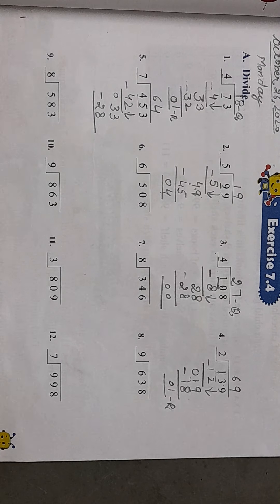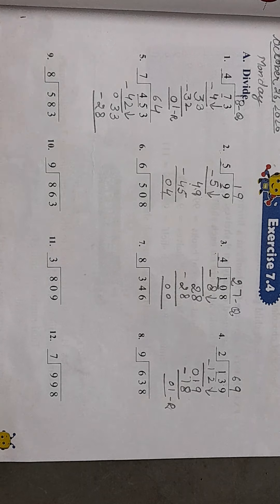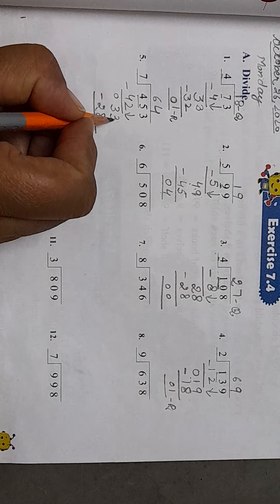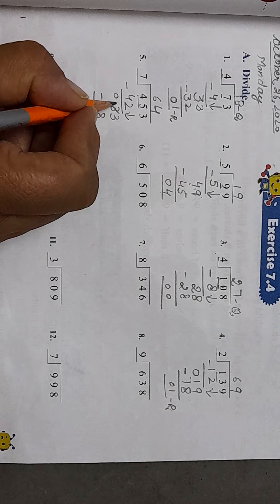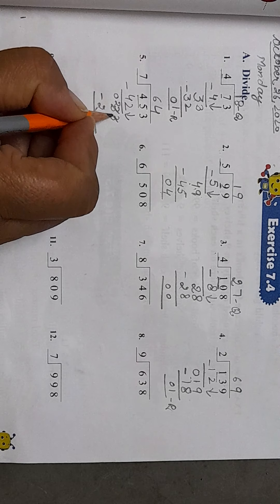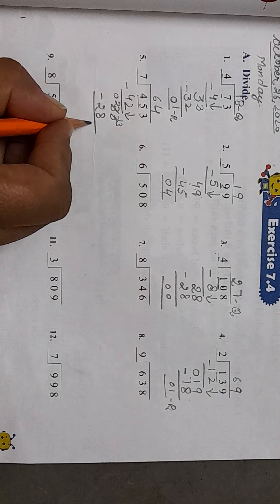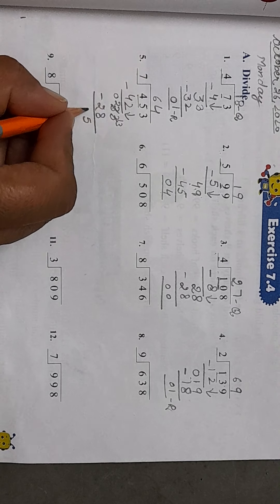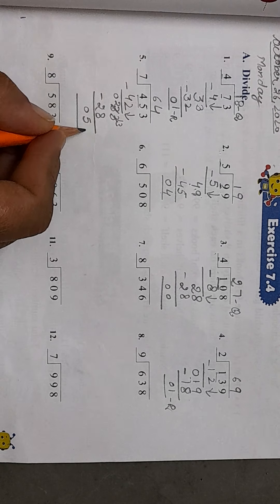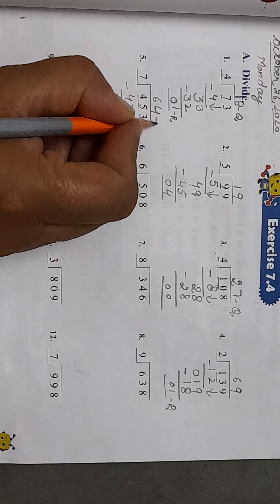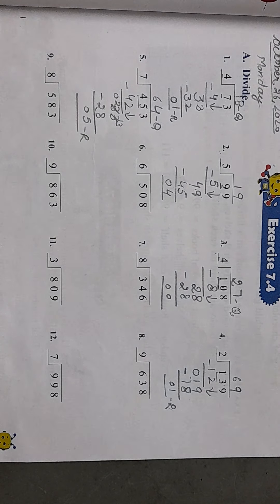We subtract it. 3 is smaller than 8, so we will take a borrow from here. 2 is left here and it changes into 13. So look at here, 13 minus 8 is 5 and 2 minus 2 is 0. So 5 is the remainder and 64 is the quotient here.